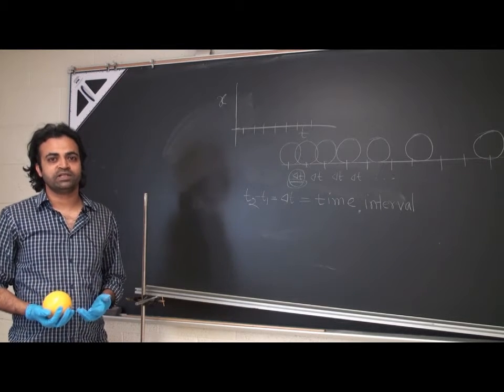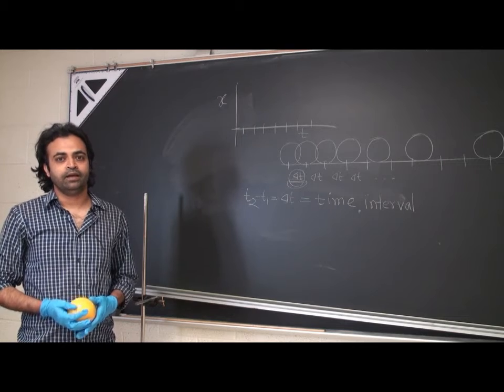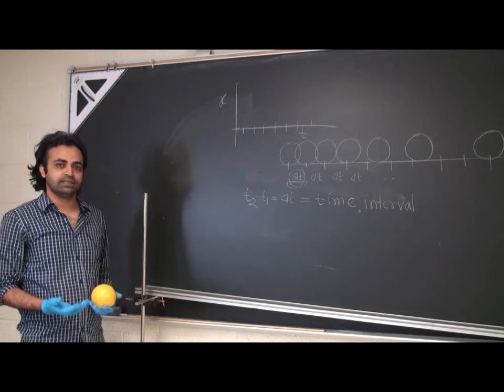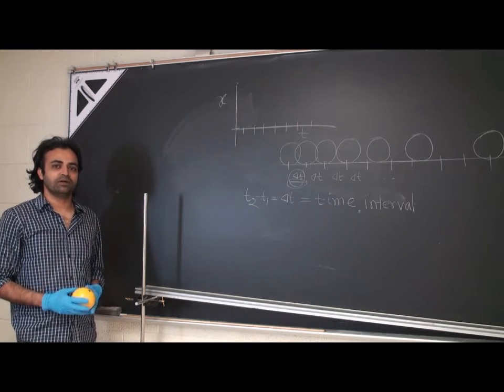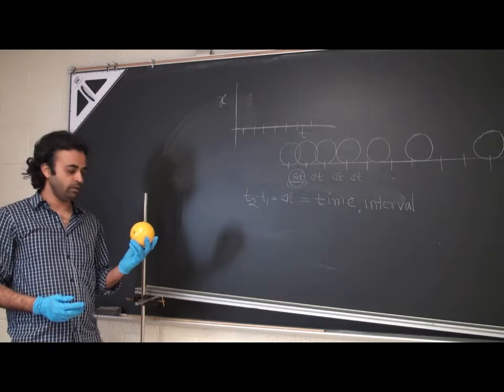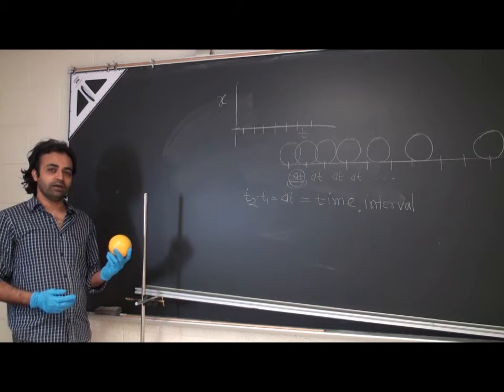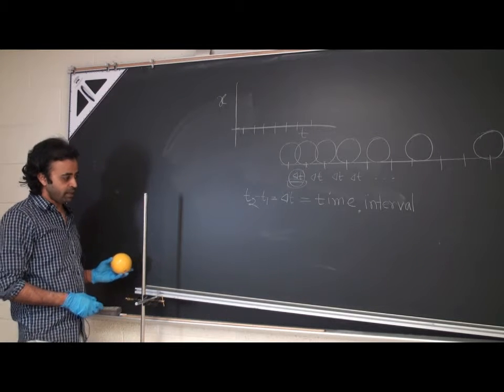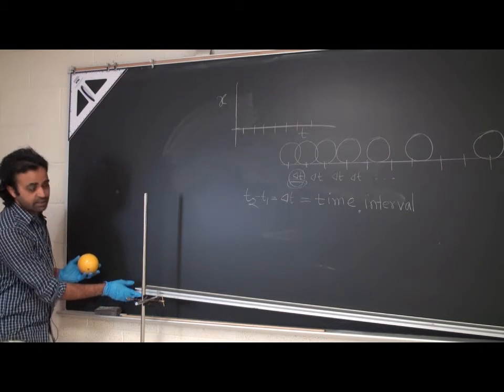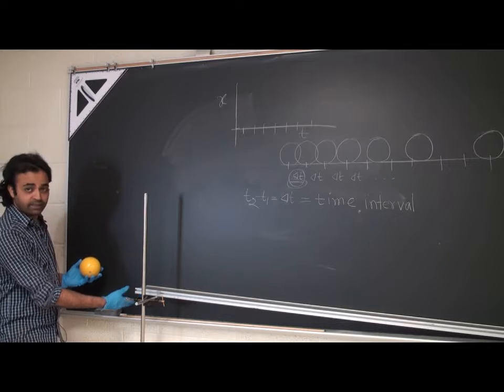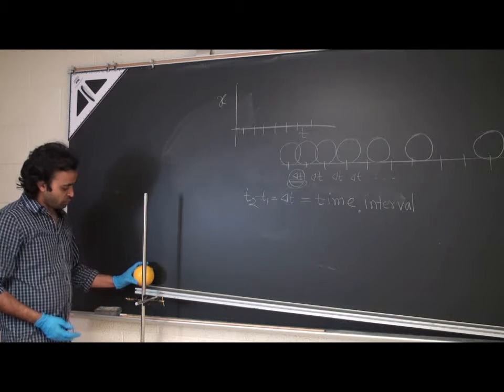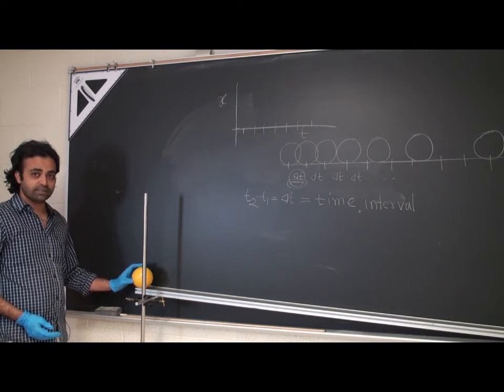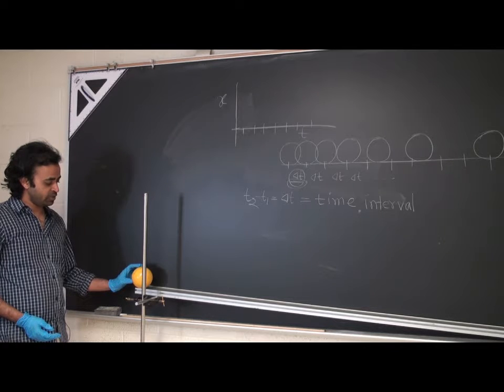Let's demonstrate section 6. To demonstrate section 6, we need to use a ball. Look at this ball. We're going to let the ball move on a tilted track. If you see the track, this track is tilted rather than flat. So if you release this ball on this tilted track, it will start to move.